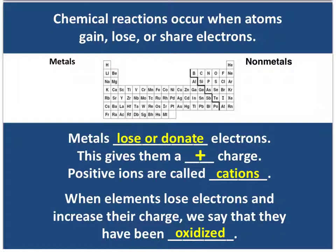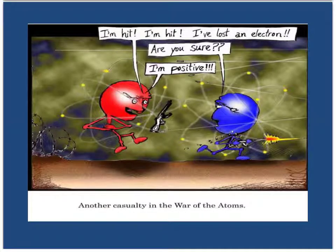So let's start with a bit of a refresher. Metals will lose or donate electrons. When they do that, they're going to have more positive charge — more protons than electrons — so that gives them a positive charge. And these ions are called cations. When the elements lose electrons, the charge is increased. So we say that they have been oxidized. When metals lose electrons, they are oxidized.